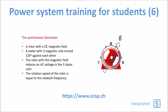Most generators connected to the grid are synchronous generators. Synchronous generators consist of a rotor with a DC magnetic field. Then we have a stator with three magnetic coils, which are turned 120 degrees against each other. The rotor with its magnetic field induces an AC voltage in the three stator coils, and the rotation speed of the rotor is equal to the network frequency. That's why it's called a synchronous generator.